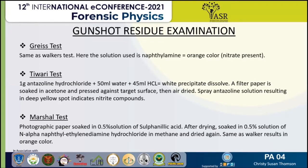In the Greiss test, anisidine hydrochloride and water are mixed. After that, zinc dust is added until the white precipitate is dissolved. A filter paper moistened with acetone is pressed against the target surface and dried. Then anisidine solution is sprayed, and a color reaction indicates nitrate compounds. The last test is Marshall's test, where photographic paper is soaked with 0.5% sulfanilic acid, dried, and then N-alpha-naphthylethylenediamine dihydrochloride in ethanol is sprayed. After drying, an orange color is obtained, similar to Walker's test.